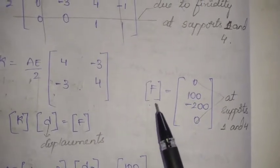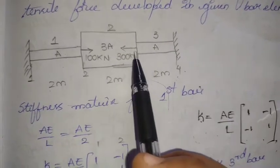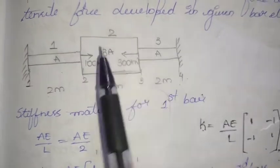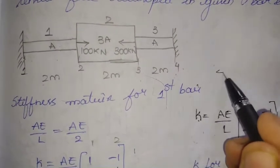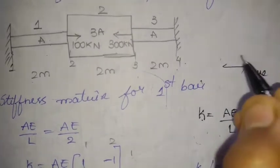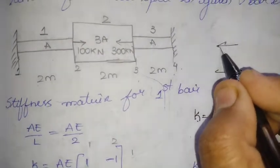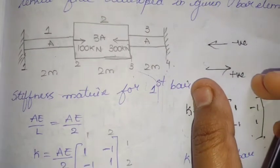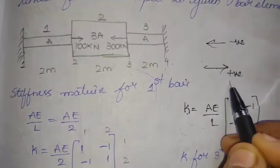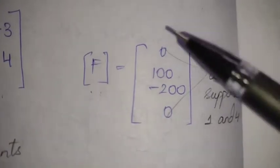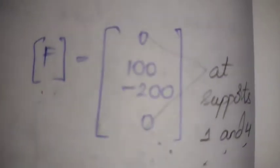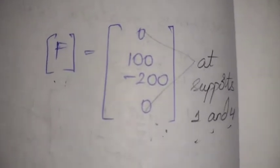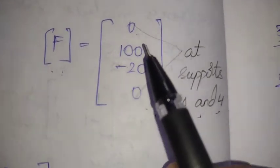We also consider the external forces. There are no forces at nodes 1 and 4; forces act only at nodes 2 and 3. For the sign convention: arrows pointing to the right are positive, arrows pointing to the left are negative. The 100 kN load at node 2 acts to the right so it is positive, and the 200 kN load acts to the left so it is negative.